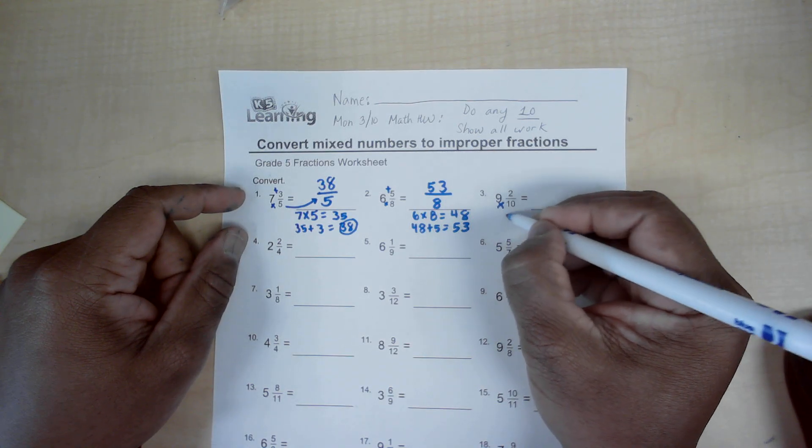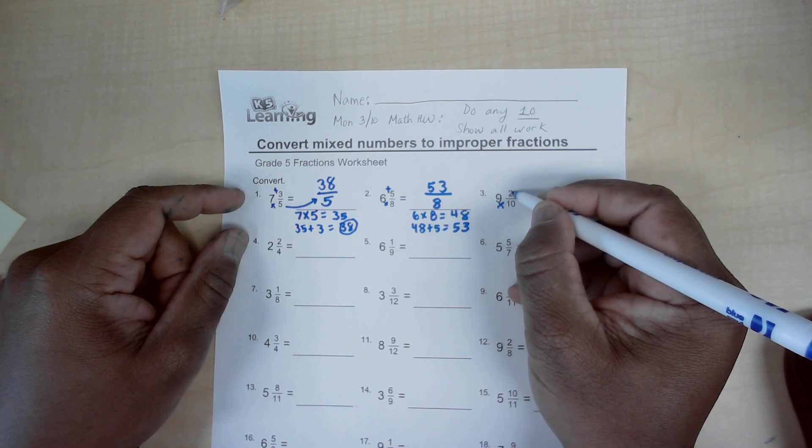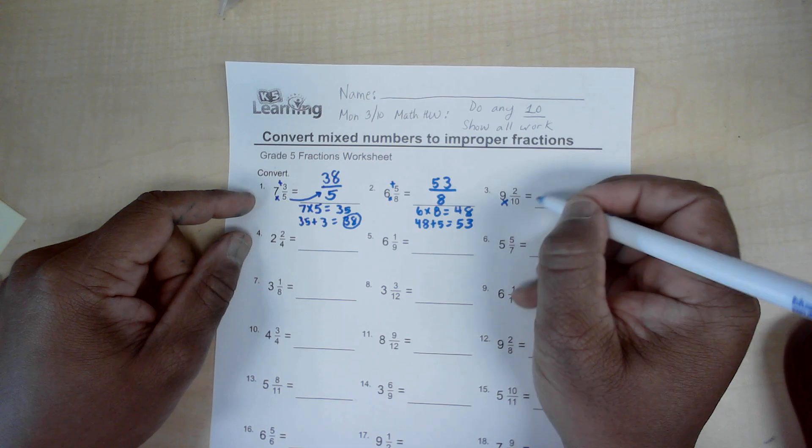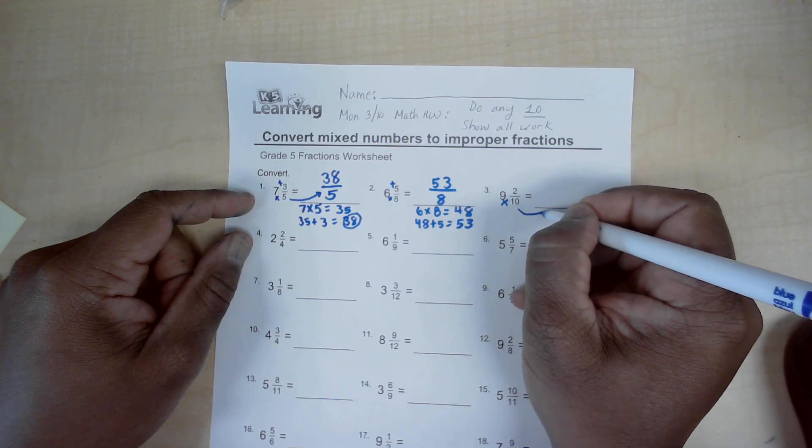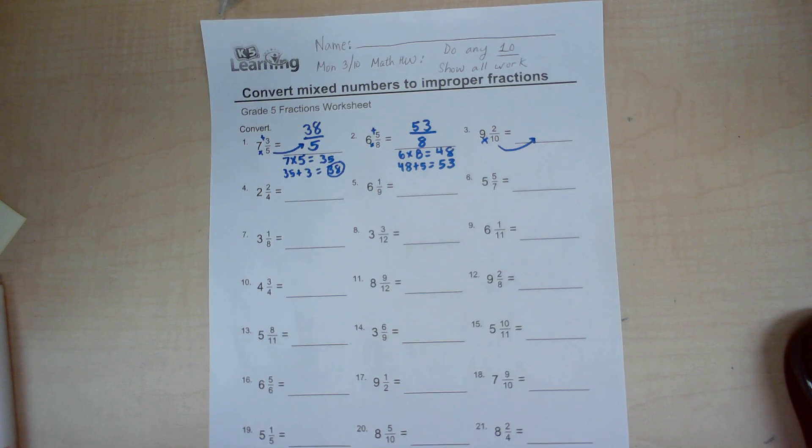You get an answer and you take that answer and add that to the numerator to get your numerator. And your denominator remains the same, just bring it over. Okay, so that's how you do mixed numbers to improper fractions.